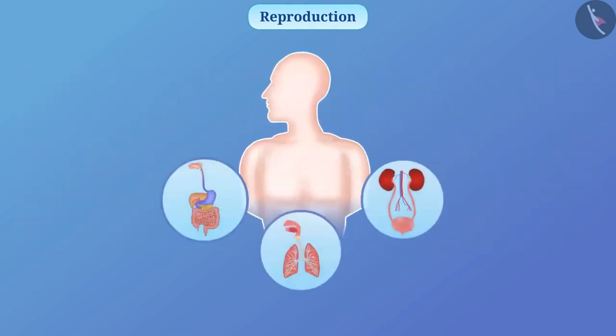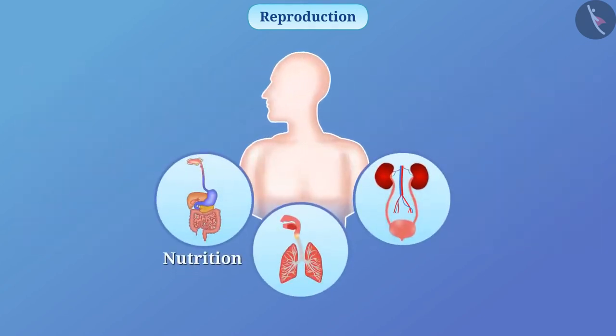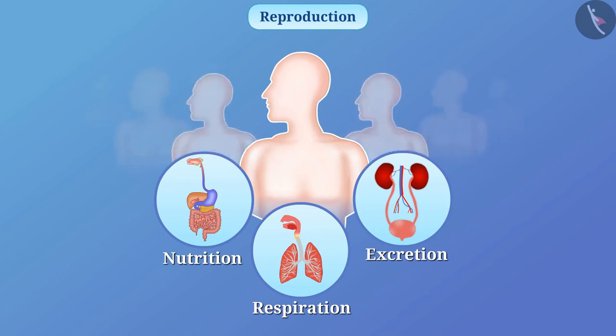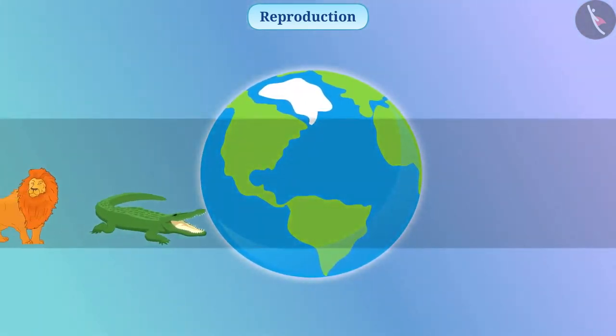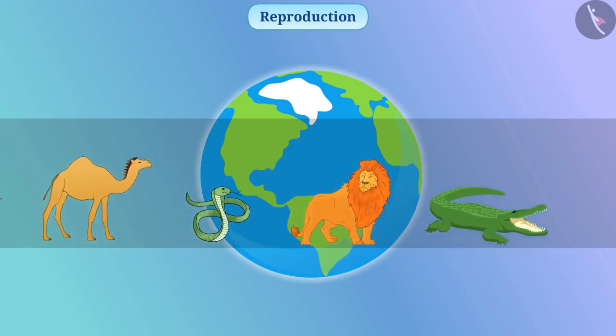We know that various processes like nutrition, respiration, excretion, etc. help to keep the organism alive. Reproduction is different from these processes — it helps the organism to keep its species alive. Without reproduction, no life is possible on earth.